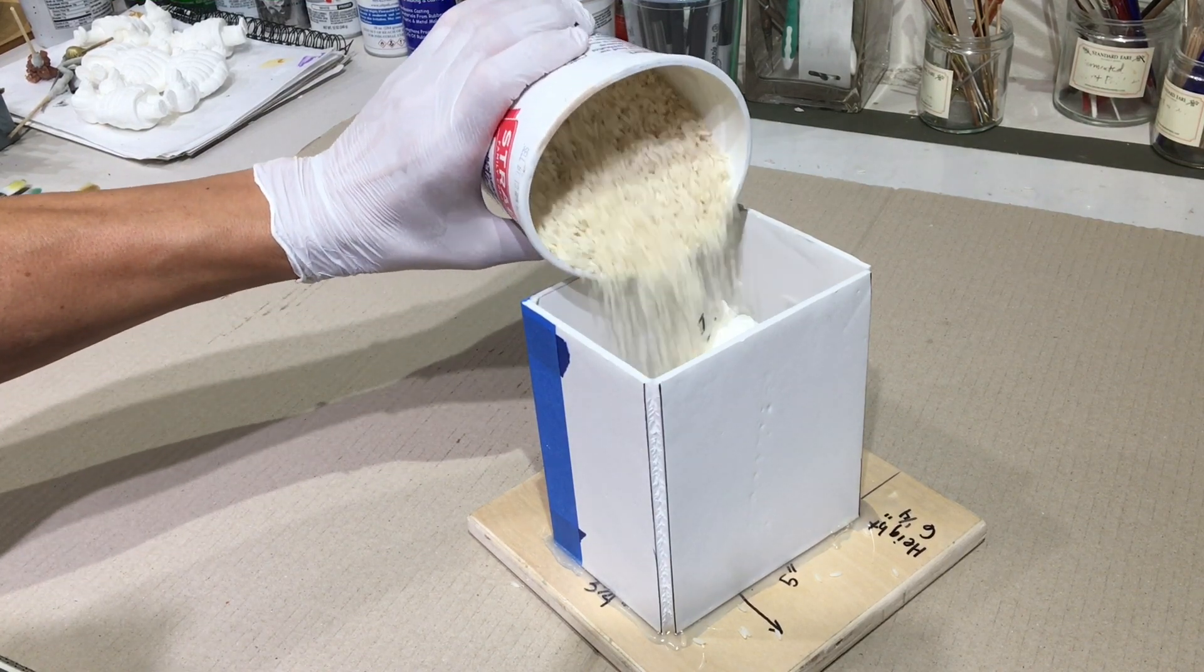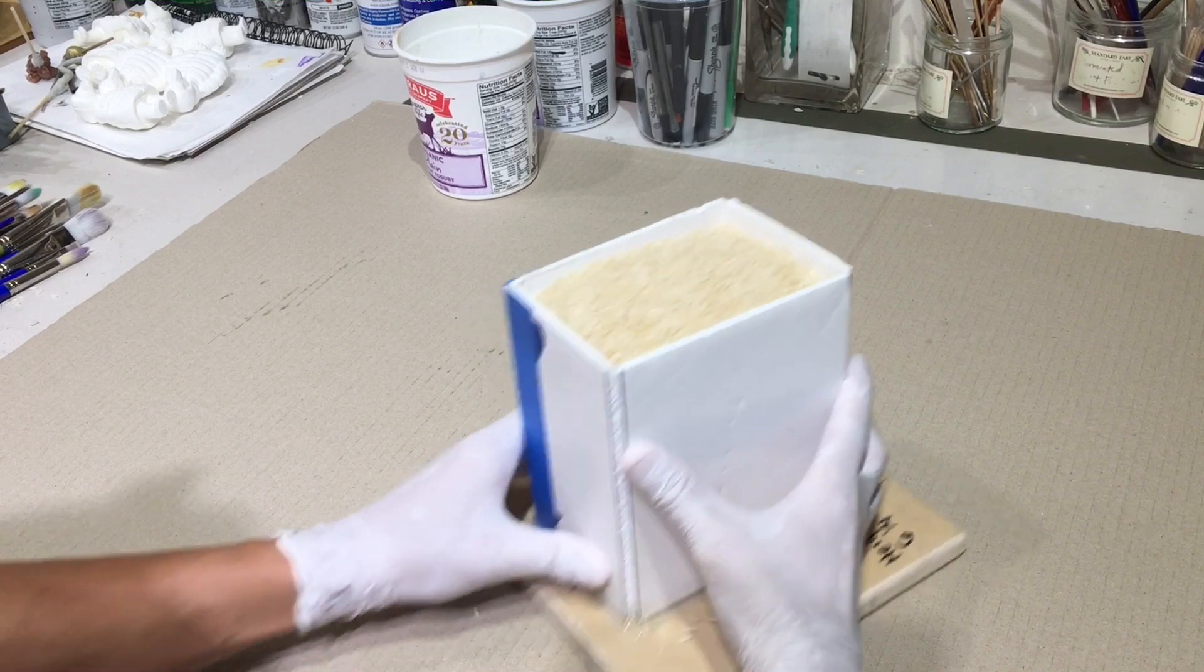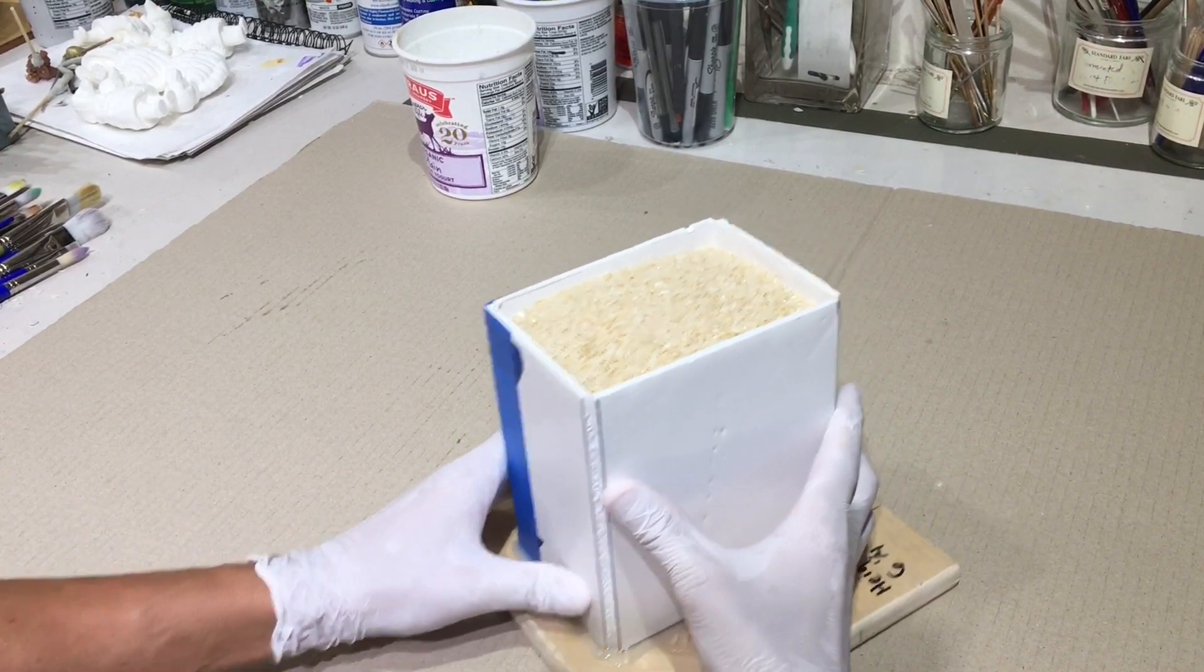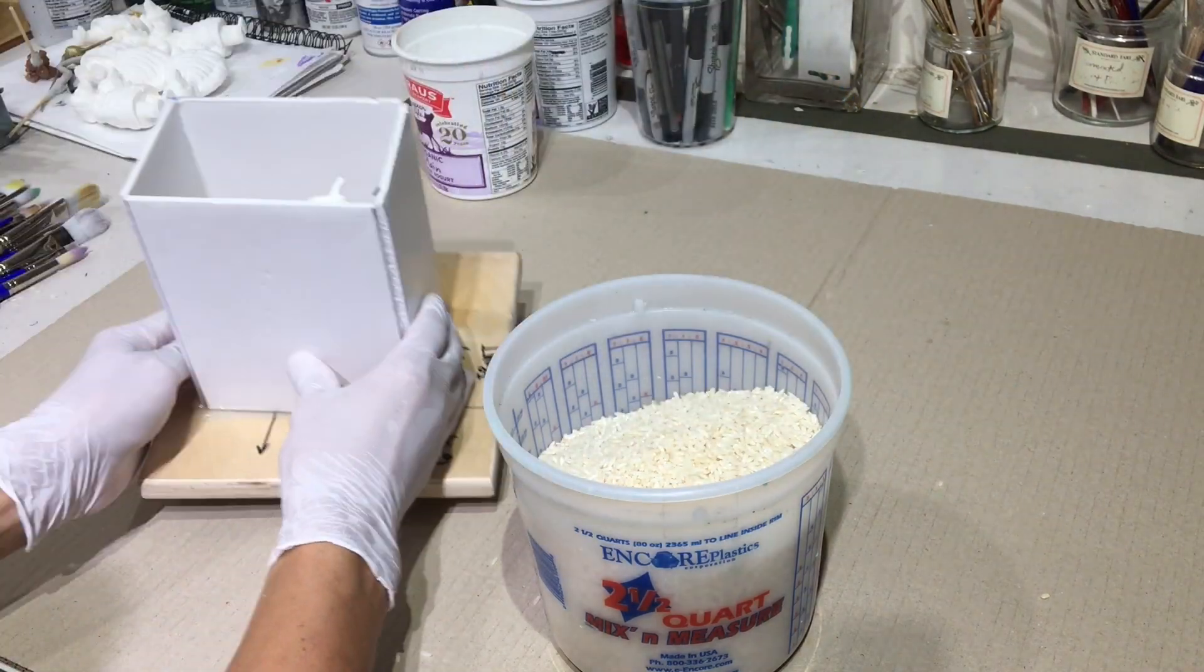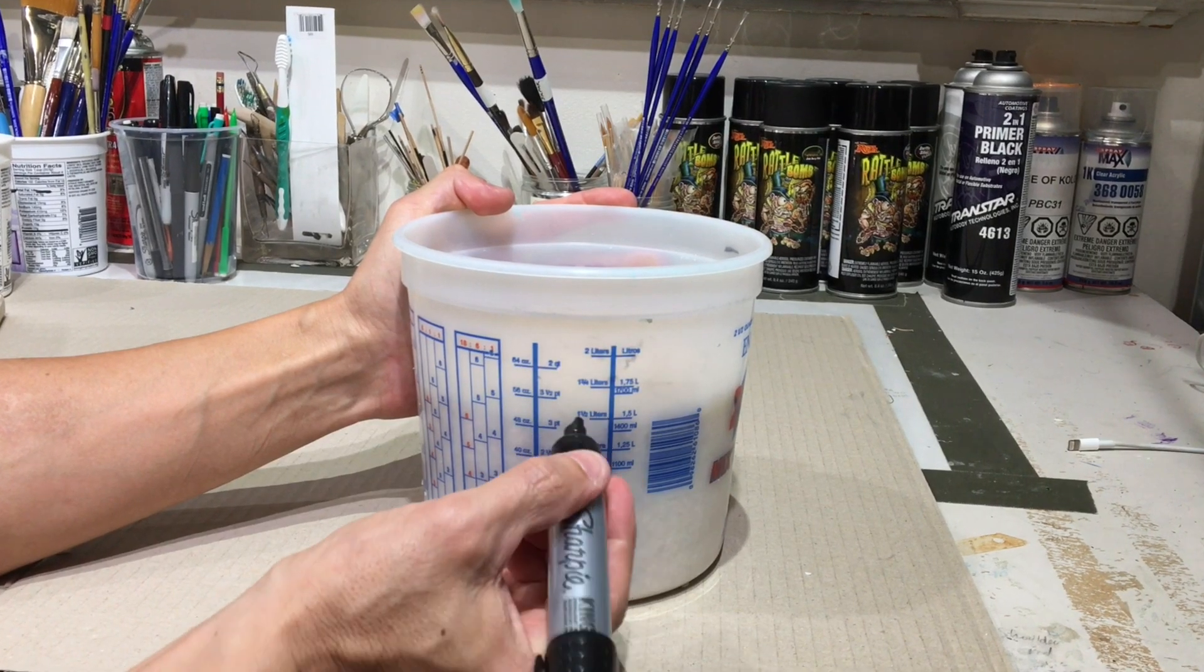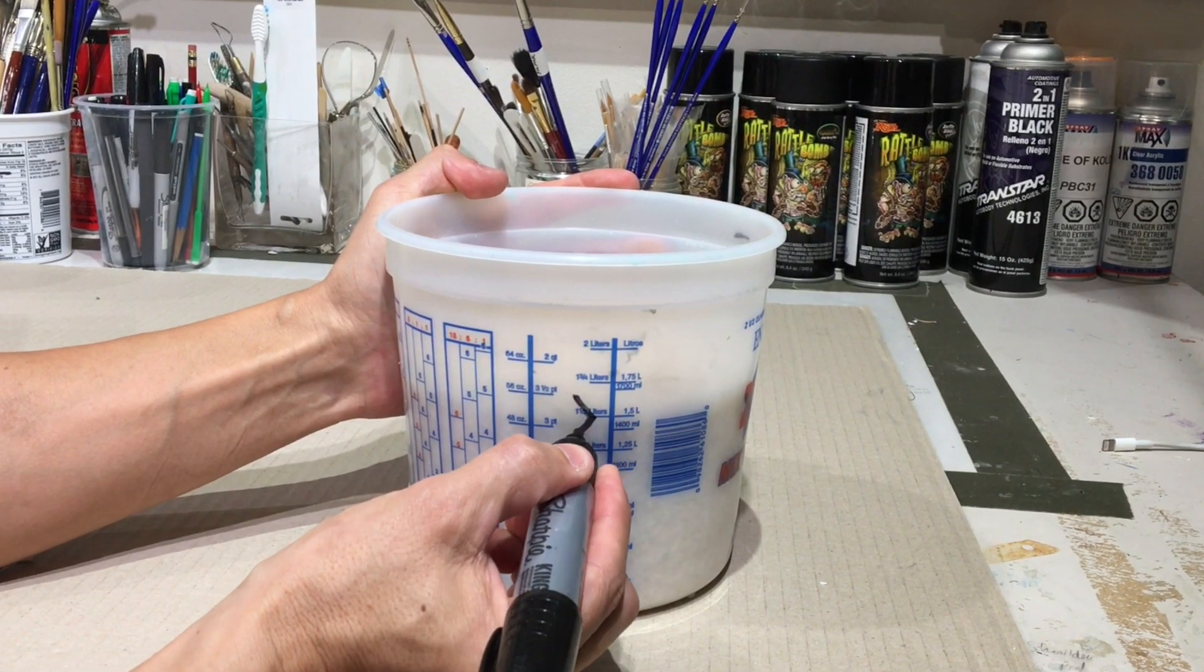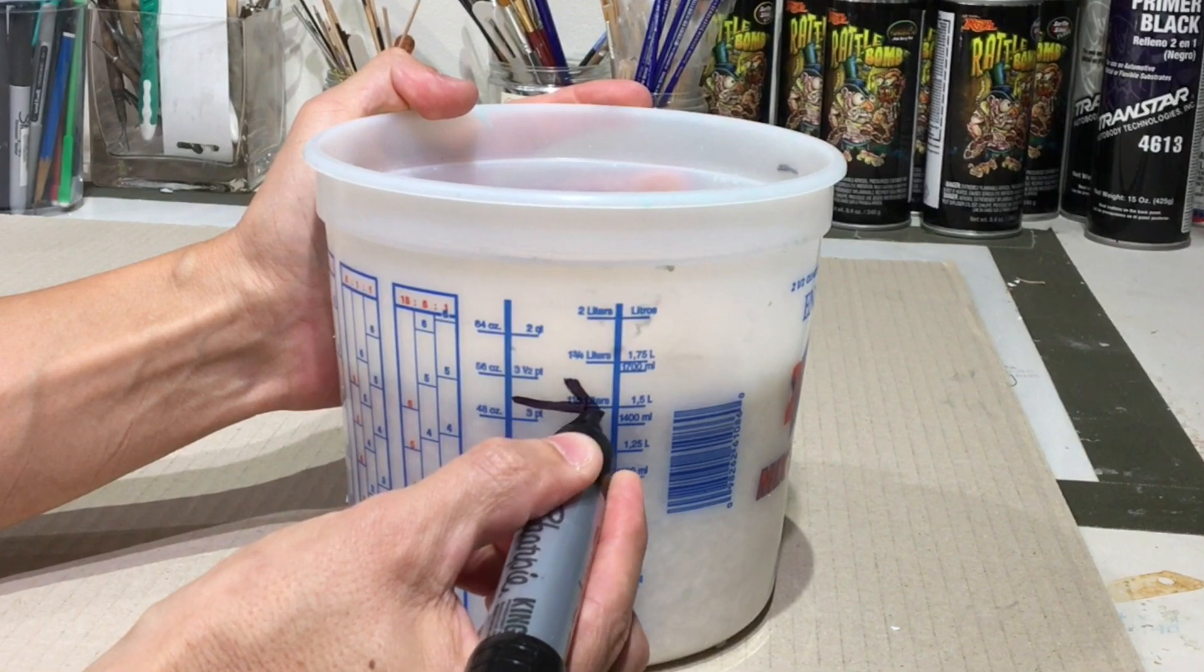So an easy way to find the volume of this container is to fill it with rice. Give it a little shake. Make sure it gets in all the little nooks and crannies. And then pour that rice back into one of the measuring containers. Give it a little shake to level it out. And then I can see here that the volume is one and a half liters. So I know that I'll need three quarters of a liter of part A and three quarters of a liter of part B.